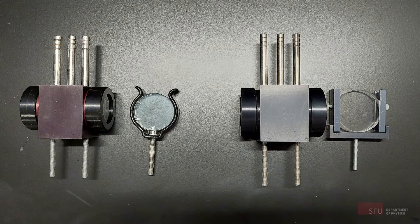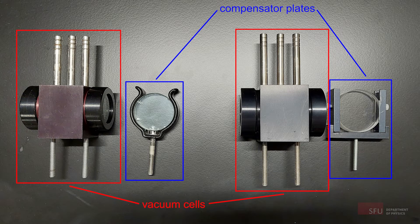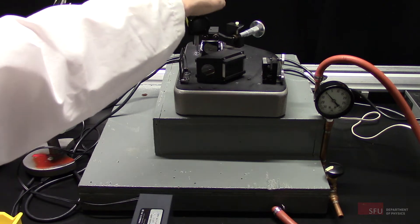There is an optional experiment where you use one of these vacuum cells and a pump to remove air in the cell and measure the refractive index of air. If you do this experiment, you place a vacuum cell here.